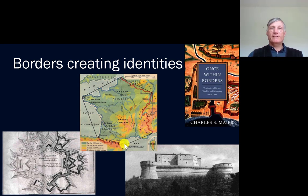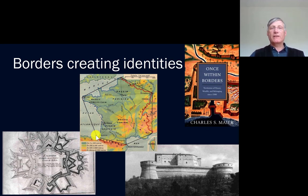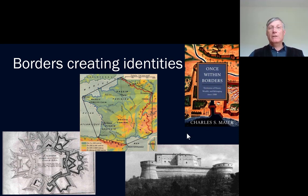How are borders used to create identities? The example of France is very illustrative. The French national identity very much stresses the importance of its six natural borders along the Mediterranean, the Alps, the Rhine more or less, the Massif Central, and the Atlantic Ocean. Those six natural borders are seen as constitutive of French national identity. It's part of the 16th century discourse on the formation of territorial states. The importance of borders in the creation of states and also in the creation of national identities is discussed in the great book of Charles Maier, 'Once Within Borders.'